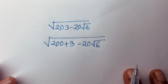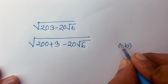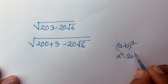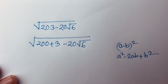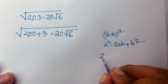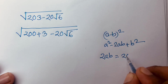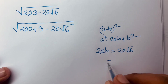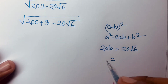We know that (a minus b) whole square equals a squared minus 2ab plus b squared. Following this formula, I can see here that 2ab is equal to 20 square root 6. So we need to find out the values of a and b.